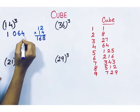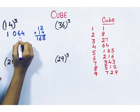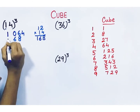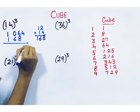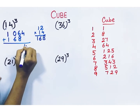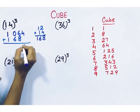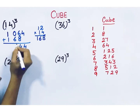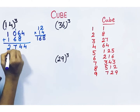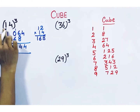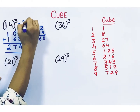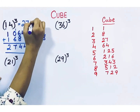While writing 168, leave one space and write like this. Then do the addition. The cube of 14 is 2744.